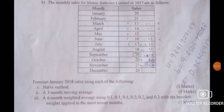We are looking at a question on forecasting. Specifically, we have three questions based on this table showing the monthly sales for Mansa Batteries Limited in 2017. We need to forecast January 2018 sales using each of the following methods.